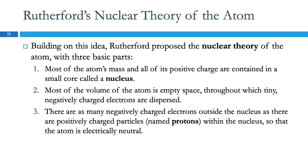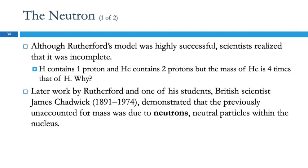This led to the nuclear theory of the atom. Most of the atom's mass and all of its positive charge are in the nucleus — the small part in the middle. Most of the volume of the atom is empty space, and in that empty space we have tiny negatively charged electrons. There's an equal number of negatively charged electrons and positively charged particles, which were given the name protons. Equal numbers of protons and electrons is how an atom is neutral in charge. But there were still some problems.